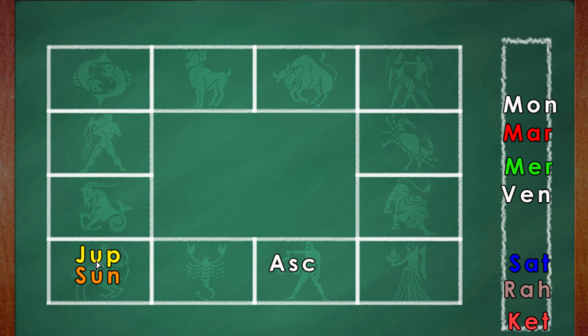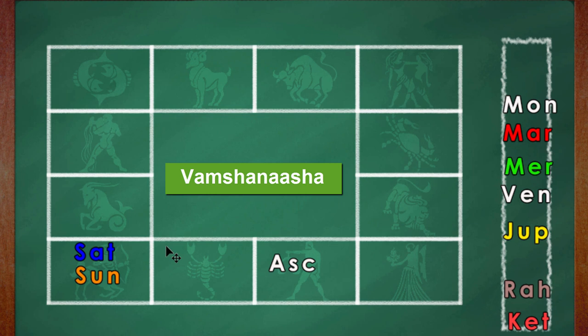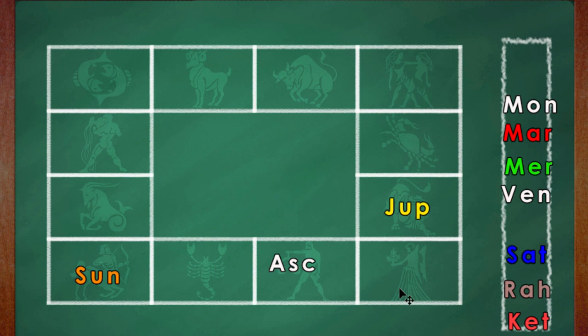If the Sun is associated with the malefic and is also aspected by a malefic, the family will be destroyed. In short, the help from family would not be available at all. Instead of Jupiter, if you have Saturn over here, then it could become very bad.